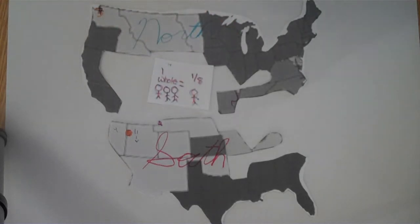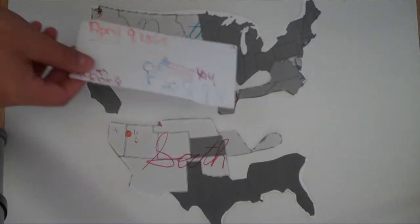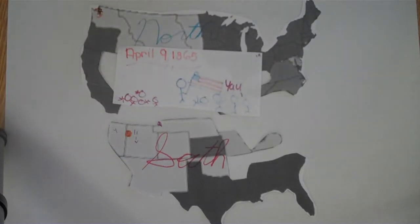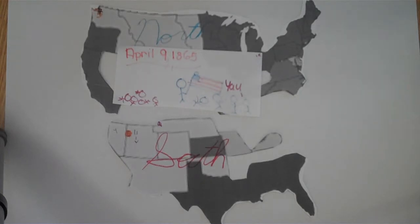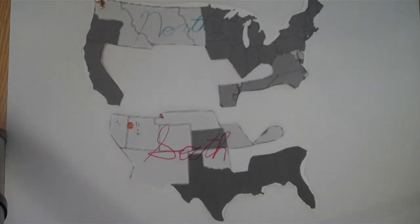Finally, the war ended on April 9, 1865. It was a victory that held America together. The North had won. Slavery was abolished everywhere in the U.S. and the North was happy, although the South wasn't.